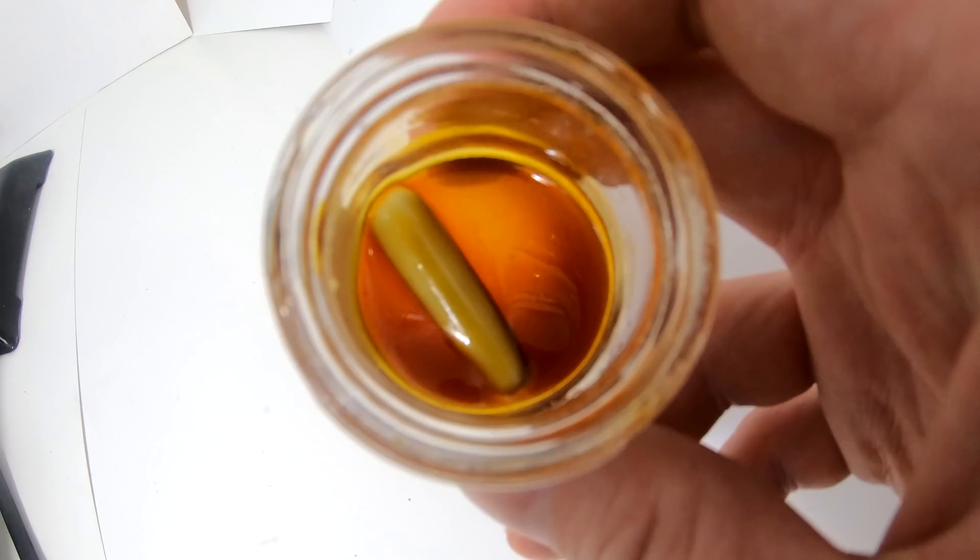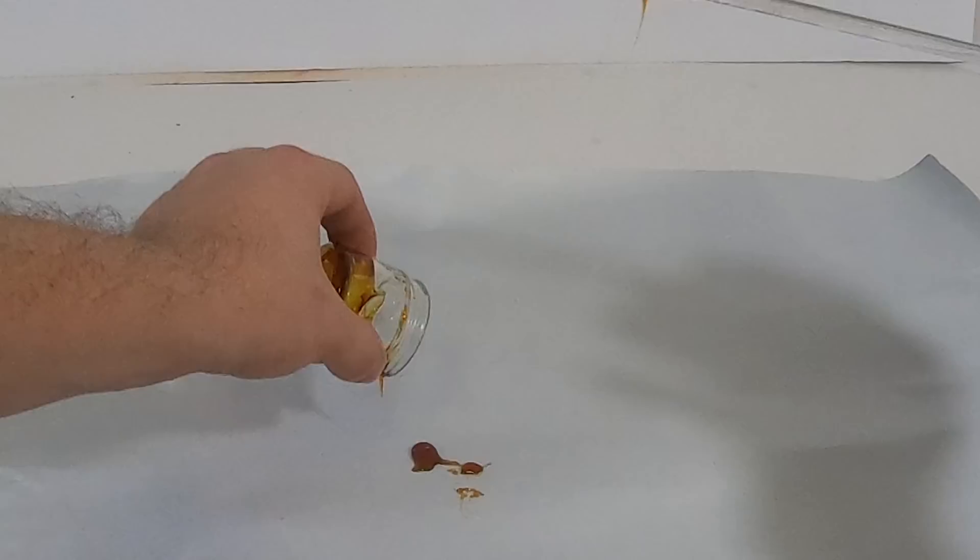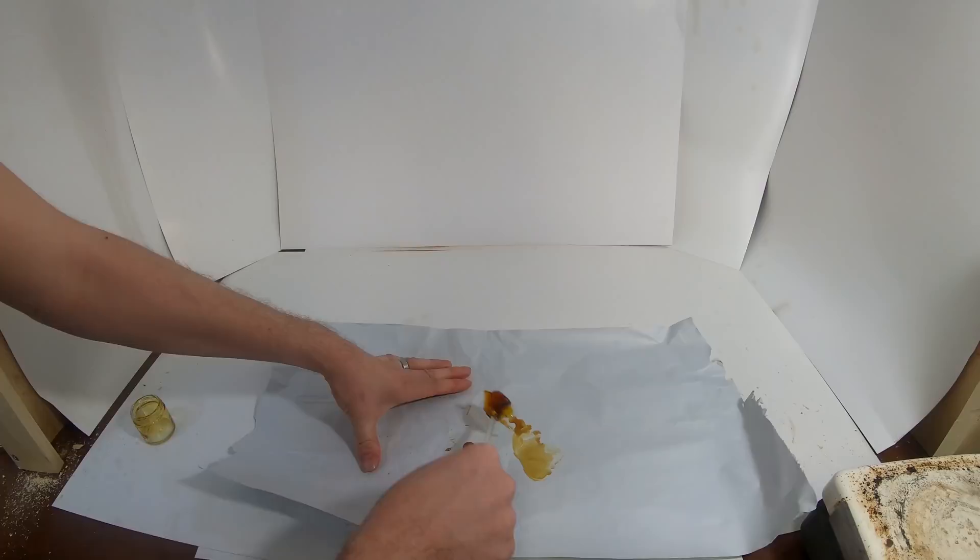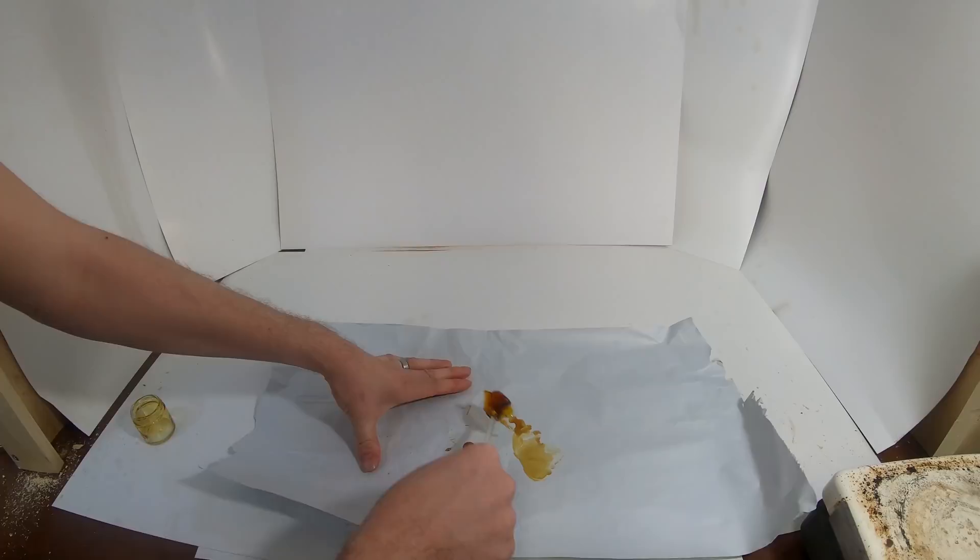After that I was left with a nice clear amber oil. I poured it out onto parchment paper and used a heat gun to get it all out of the jar. After letting it cool down it had a nice consistency like shatter as you can see here.